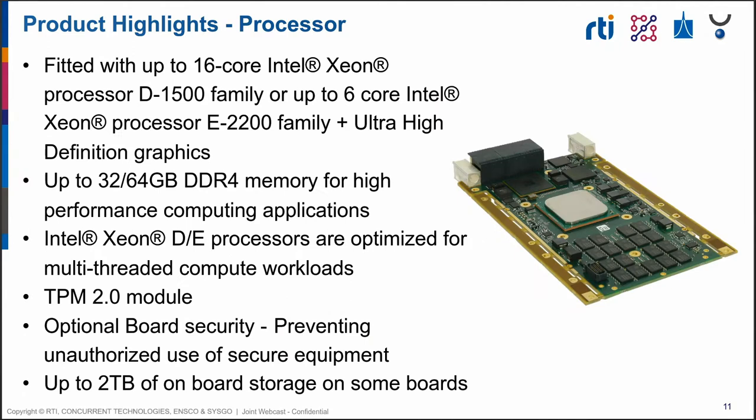Looking at the actual hardware on the boards: the processors fitted are either the Intel Xeon D family — up to 16 cores — or the lower-core-count Xeon E processor family, which is a lower-power device but comes with an ultra-high-definition GPU embedded. All boards come with class-leading DDR4 DRAM up to 64 gigabytes on board, all soldered down. We also support a wide range of direct attached storage like NVMe, M.2 modules, SATA solid state drives, or SATA flash devices, supporting up to two terabytes on board.